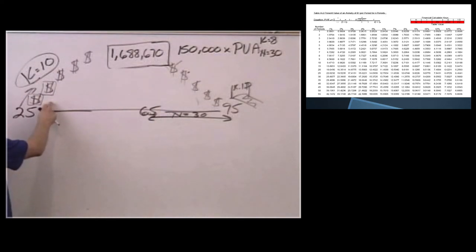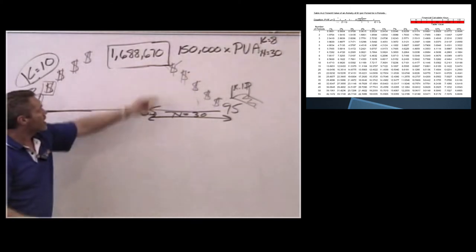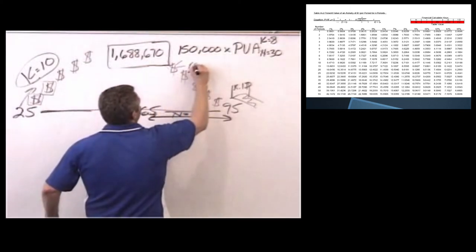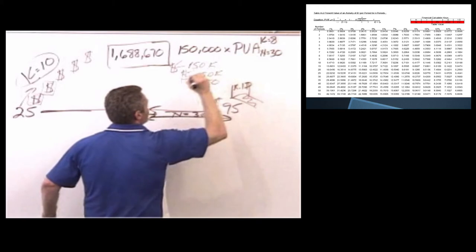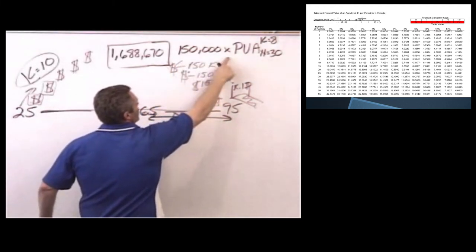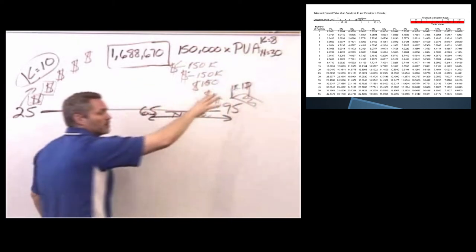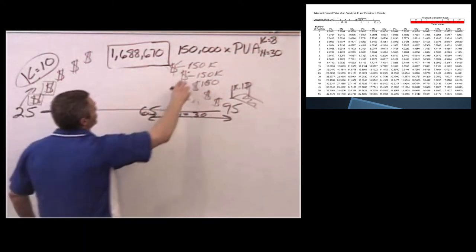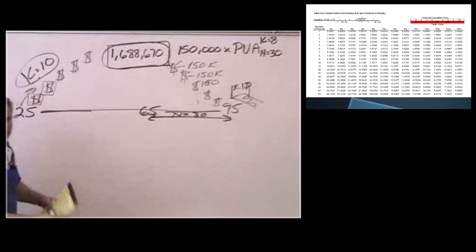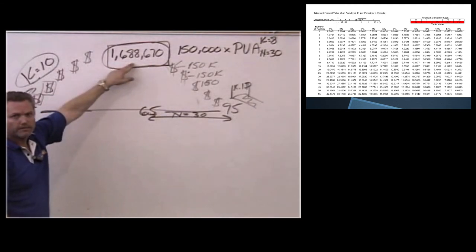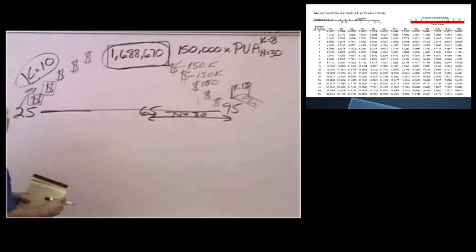Okay. Now we need to do the second half of this equation. We calculated this side over here because we need cash flows every single year of $150K, which is an annuity. We've taken the $150,000 times present value of an annuity, K equals 8, N equals 30. And we're going to use 8 because we want a diversified portfolio. We multiply that, and now I know that this pot of money that I need to get to is $1.688 million. And it sounds like a pretty big number.